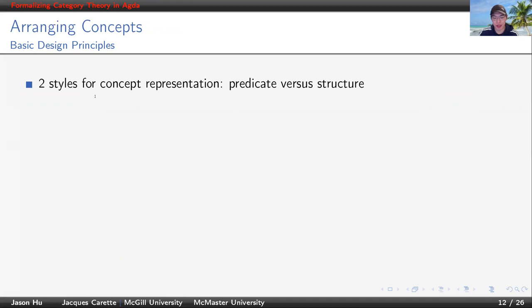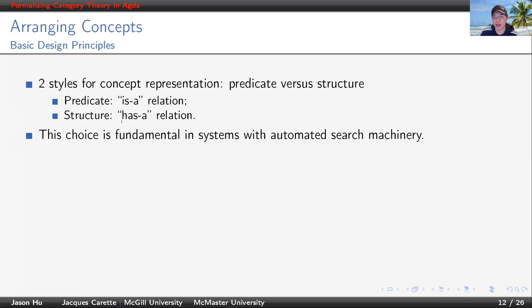Another important design principle is how to organize concepts. There are typically two styles, predicate versus structure. Intuitively, the predicate style expresses an 'is a' relation, and the structure style expresses a 'has a' relation. This choice could be fundamental in systems with automated search mechanisms, like Coq, because it drastically impacts the efficiency of the chosen automated search mechanism. But in our library, we don't really use any automation. So this problem is still important, but not quite as much. It becomes more about usability and namespaces.